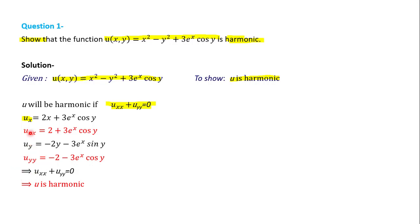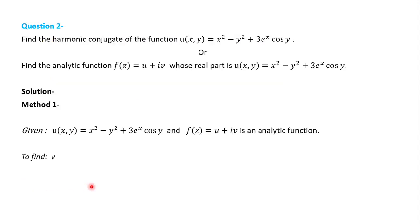Adding these two results: u_xx + u_yy = (2 + 3e^x cos y) + (-2 - 3e^x cos y) = 0. This implies u is a harmonic function. Now we try another variety: u is given and we have to find the harmonic conjugate, which is equivalent to finding the analytic function f(z) = u + iv whose real part u is given.